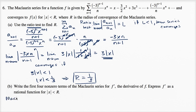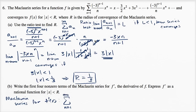The Maclaurin series for f prime of x. Well, it's going to be the sum from n equals one to infinity, and we would just take the derivative of this with respect to x. This is just application of the power rule: take the exponent, multiply it by the coefficient. So if you take n times this, it cancels out with the n in the denominator. So it's going to be negative three to the n minus one, times x to the n minus one.